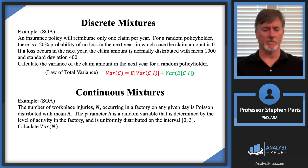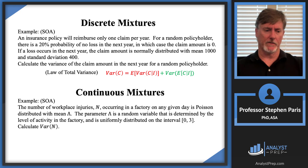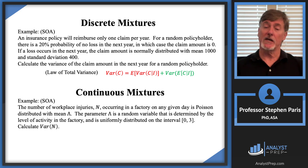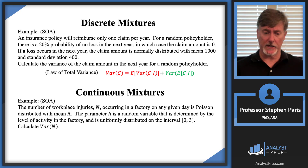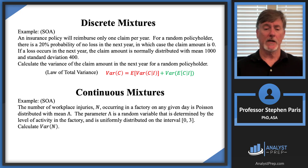Let's look at the continuous mixture problem from a previous example. You have a random variable defined parametrically, meaning one of the parameters is itself a random variable — that's what a continuous mixture is. In this case, the number of workplace injuries, cap N, was a Poisson distribution with parameter cap lambda, where cap lambda was a uniform distribution over the interval from zero to three. We were asked to calculate the variance of this unconditional distribution of cap N.